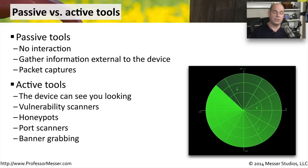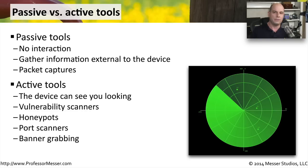But if you really want to go after a system and see how much information you can get by knocking on the door or trying to see if all of the windows are open, you can use something like an active assessment tool. These are things like vulnerability scanners that are configured to log into devices to see what might be inside of that machine. They could be things like honeypots or port scanners, or even devices that are designed to grab banner information when you first connect to a device. These are actively interacting with those devices, so we put them in the category of an active vulnerability assessment tool.